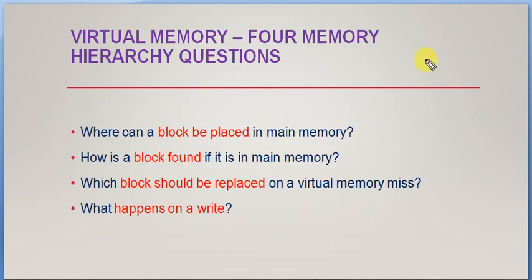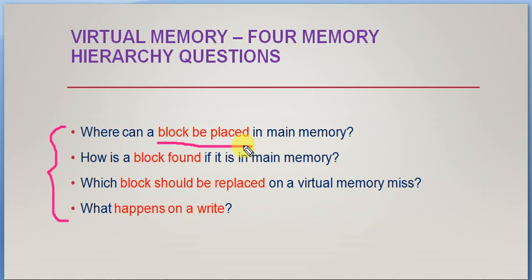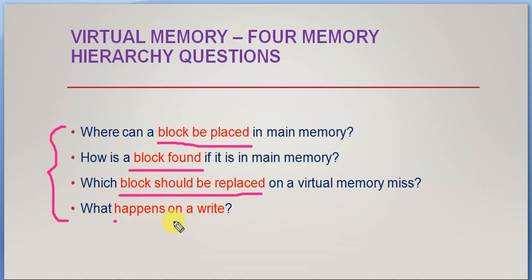For virtual memory, we have four memory hierarchy questions similar to those discussed for cache memory. First, where can a block be placed? Second, how is a block identified in primary memory? Third, which block will be replaced if there is a miss or fault? And finally, what happens when we write something into primary memory? We will see each of these one by one.